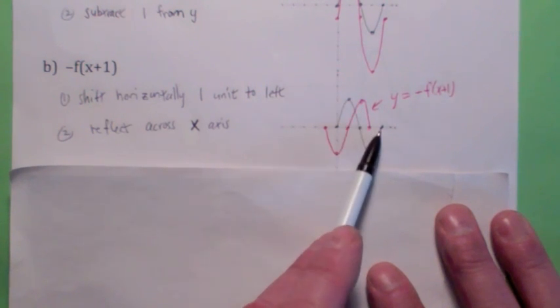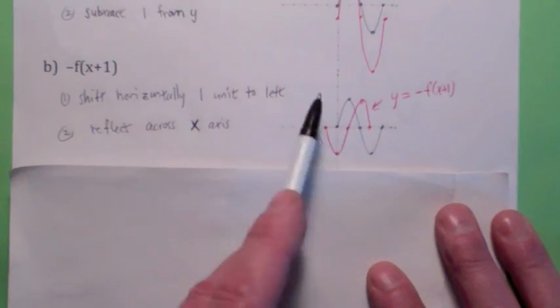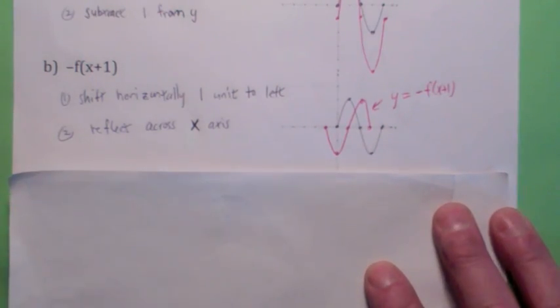And the last one: when you move it 1 to the left it goes over here, and when you reflect across the x-axis it stays the same. So this is how you do it.